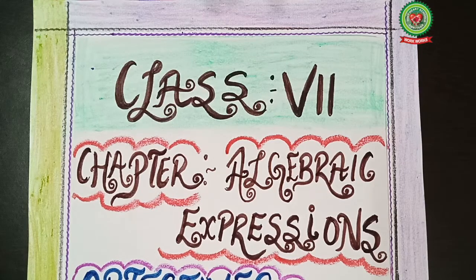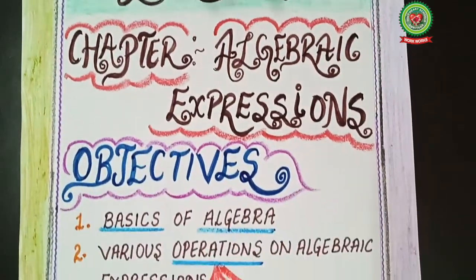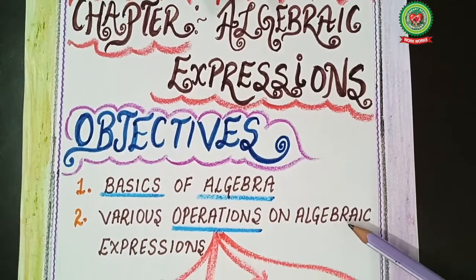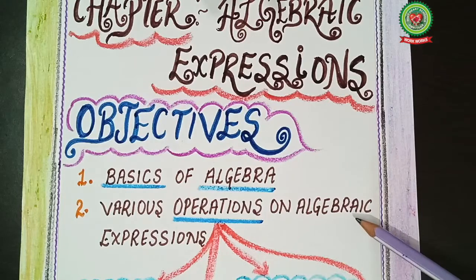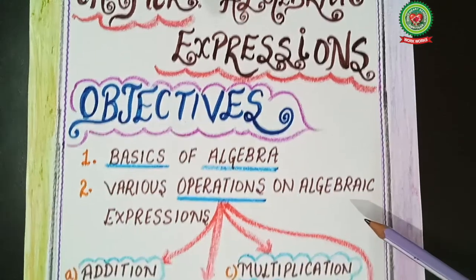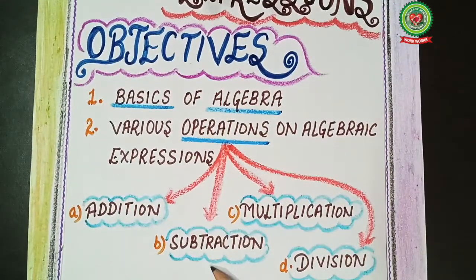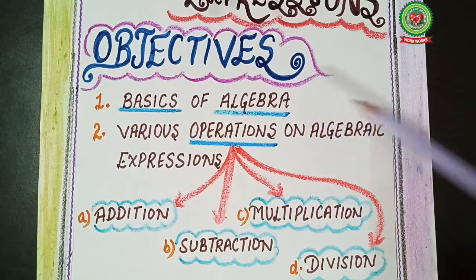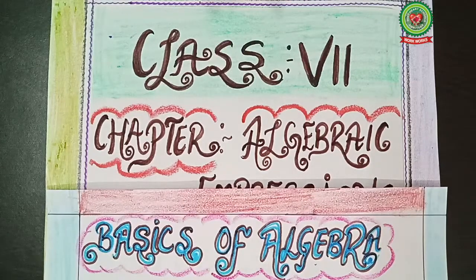Dear students, today we are going to start a new chapter: Algebraic Expressions. The objectives of this chapter are: basics of algebra, and various operations on algebraic expressions, which can be classified into addition, subtraction, multiplication, and division. For today, our topic is basics of algebra.